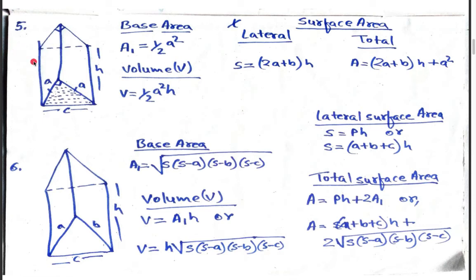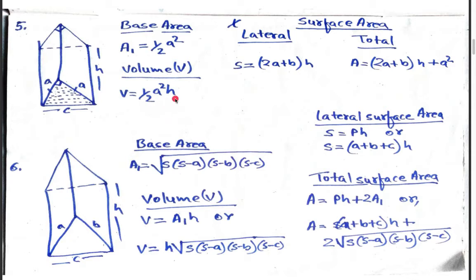In Figure 5, we are given a prism and we have to find the base area, volume, lateral surface area, and total surface area using different formulas. To find the base area, we will use the formula: A = ½a². To find the volume of this prism, V = ½a² × h.